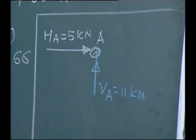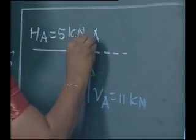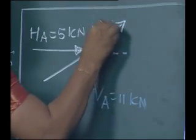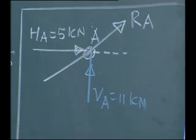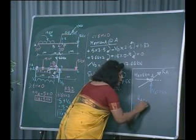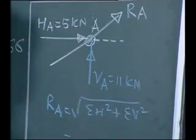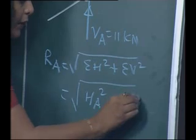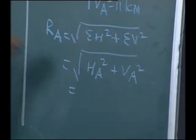Now if I want to find out the single force that is resultant R, I can easily find it out. We can extend the line of action of force. This will be our reaction RA or resultant RA. RA is equal to under root of sigma H squared plus sigma V squared. What is sigma H here? HA. And sigma V? VA.